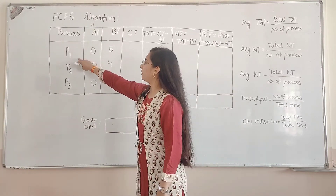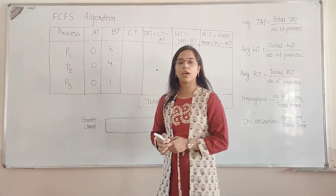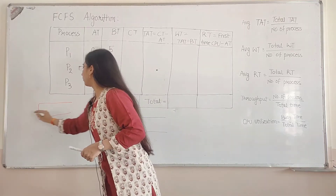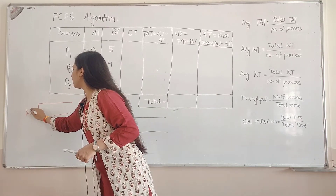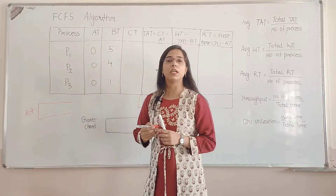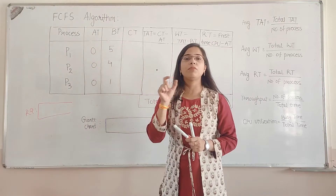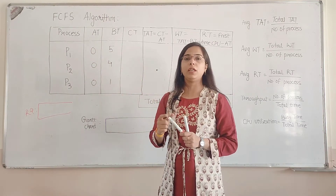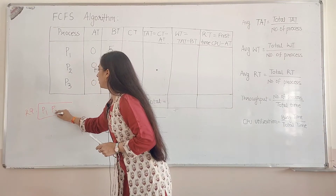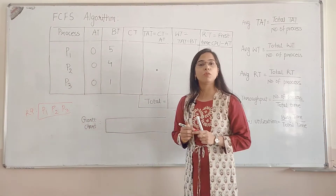Suppose I am having three processes — P1, P2, P3 — and all have the same arrival time of 0. Arrival time is when the process is in the ready queue. Since all arrive at the same time, we will insert them in the ready queue in order: P1, then P2, then P3. Whichever is at the front of the ready queue will be scheduled first.